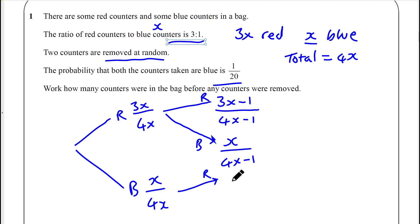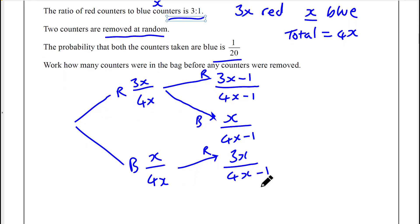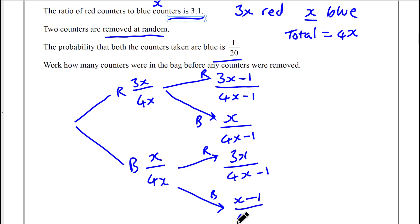Going down to the blue branch: for blue then red, no red counter was taken on this branch, so red is still 3x, but there's one less counter total, so the denominator is 4x minus 1. For blue then blue again, there's one less blue counter, and the total is still 4x minus 1. We know that the blue-blue branch multiplies to equal 1 over 20.